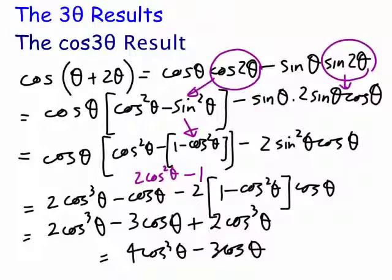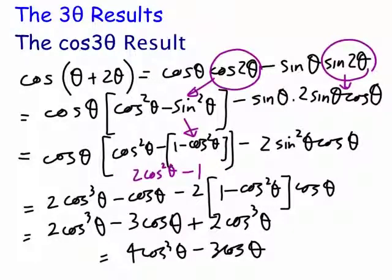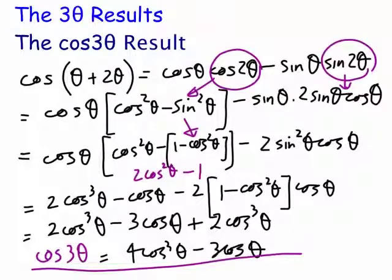We get a total result for the big bracket: two cos²(θ) minus one. When you do all the simplifications, you end up getting the cos(3θ) result, which is four cos³(θ) minus three cos(θ).